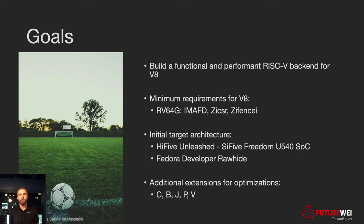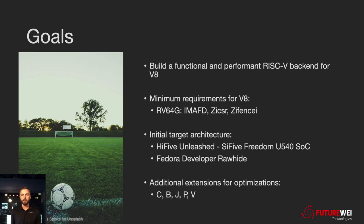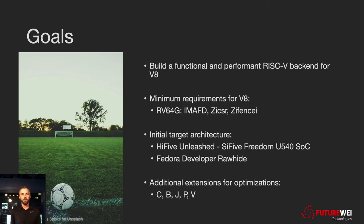The initial target hardware is the HiFive Unleashed board from SiFive — that's the Freedom U540 SoC — and we're using the Fedora developer Rawhide as the OS. In the future, there will be additional optional improvements if you have extensions: C for compact instructions, B for bit manipulation, J for dynamically translated languages, P for packed SIMD instructions, and V for vector instructions. Those will be optional, and if you have them, they will enable additional optimizations.